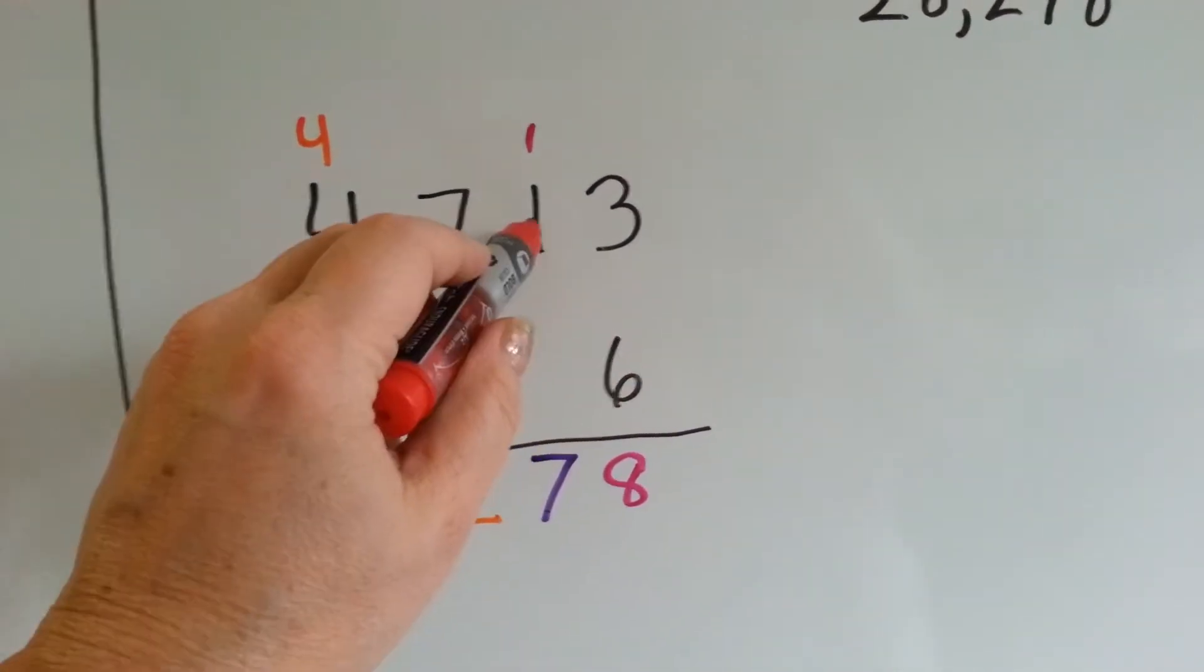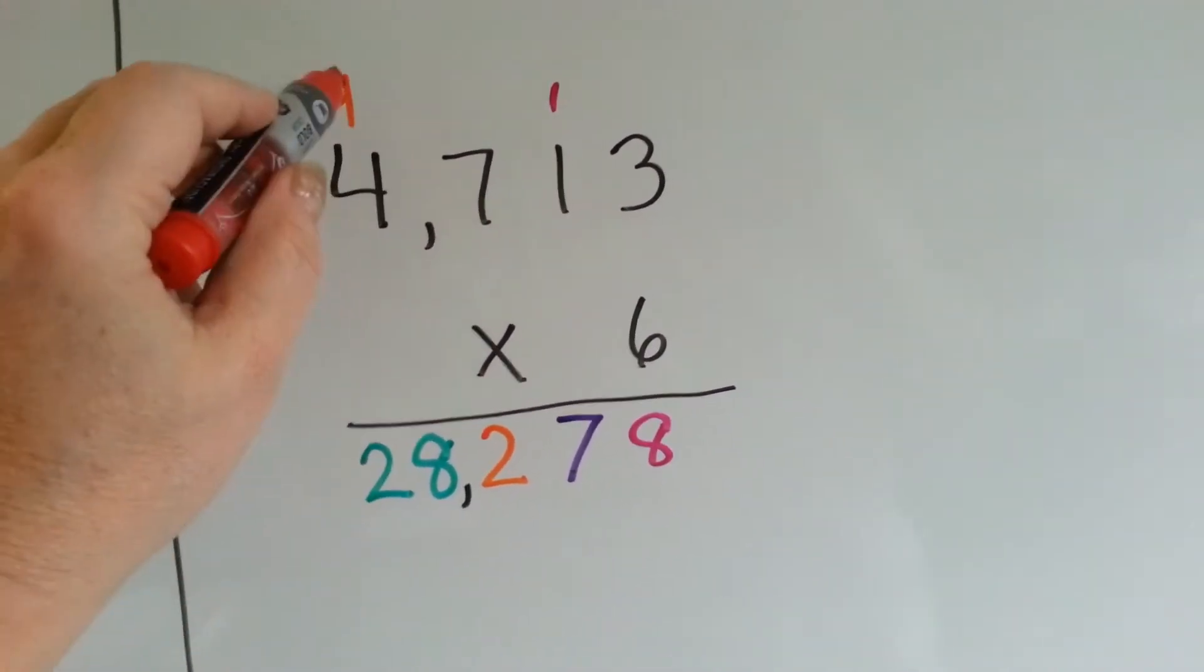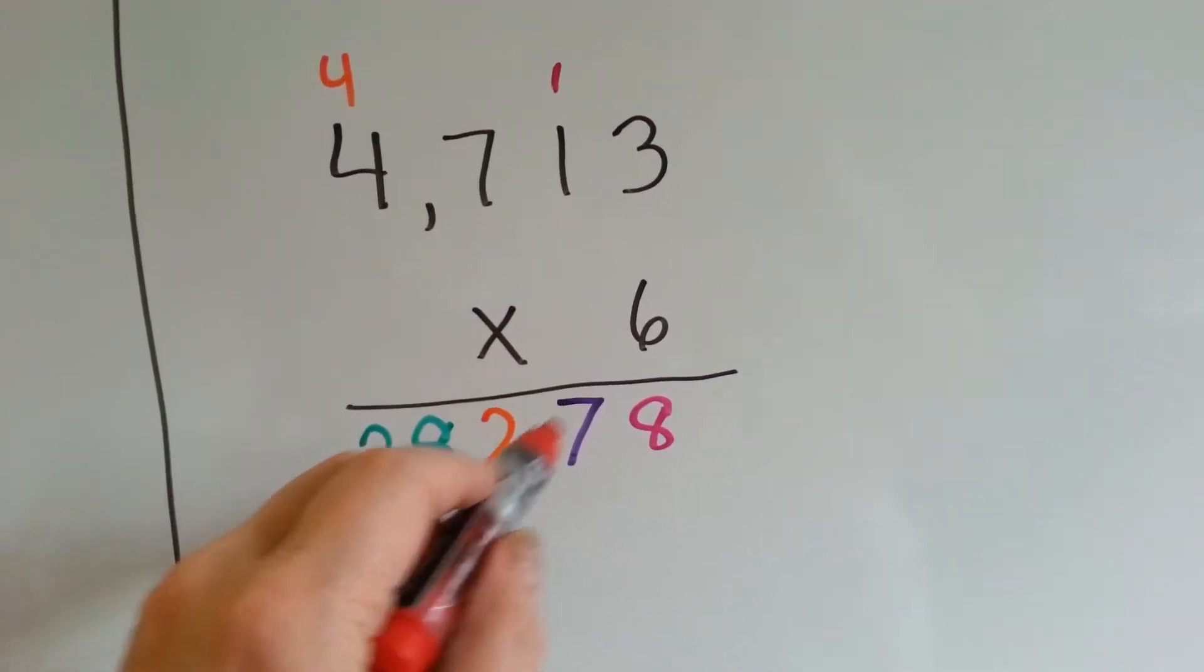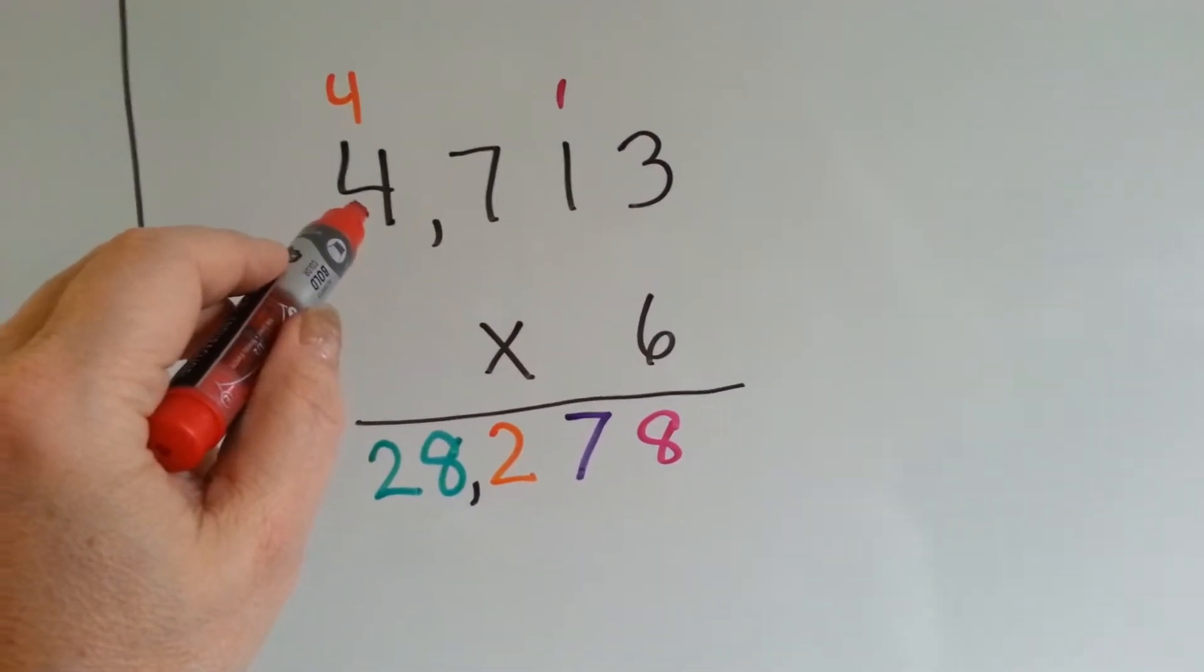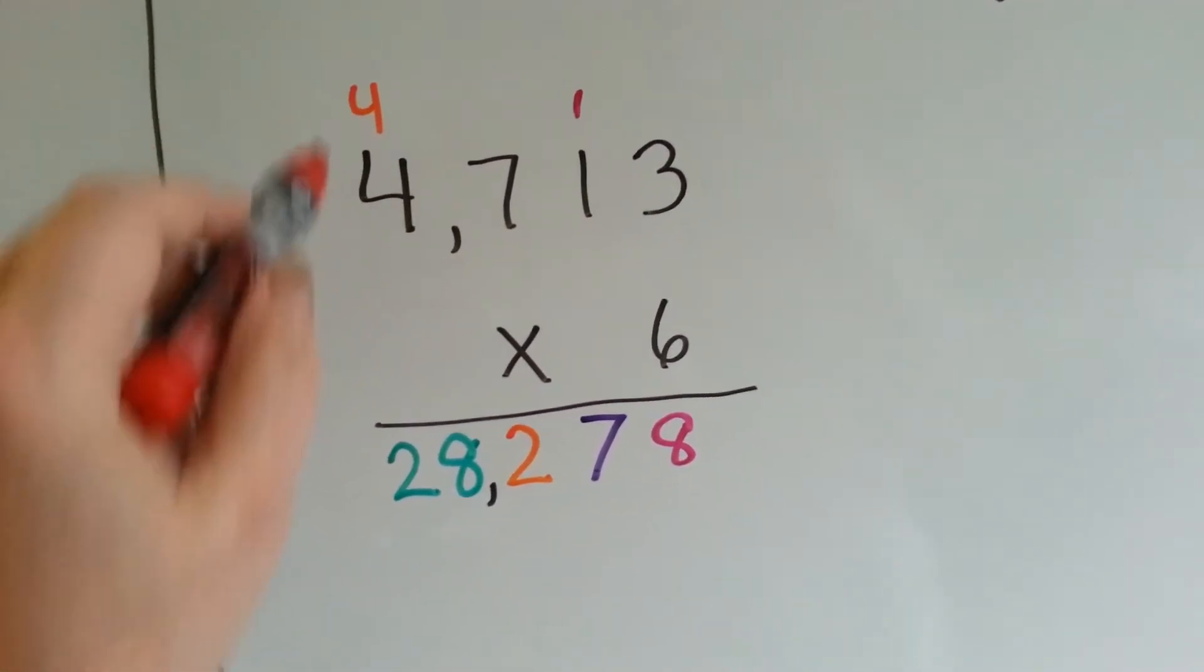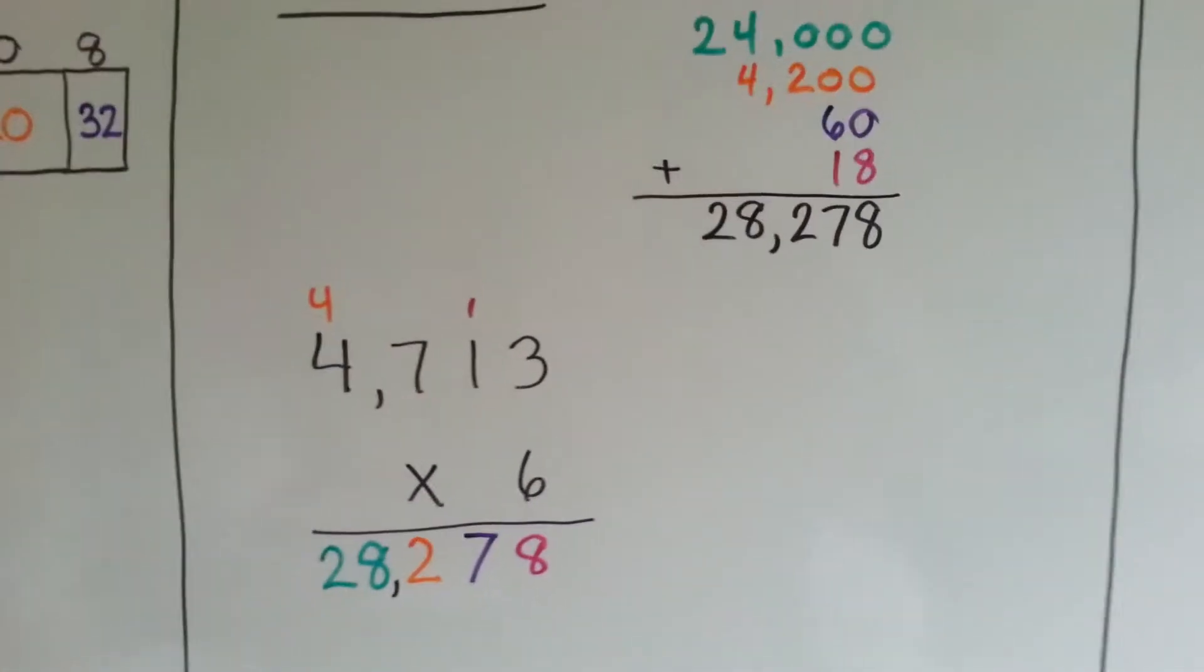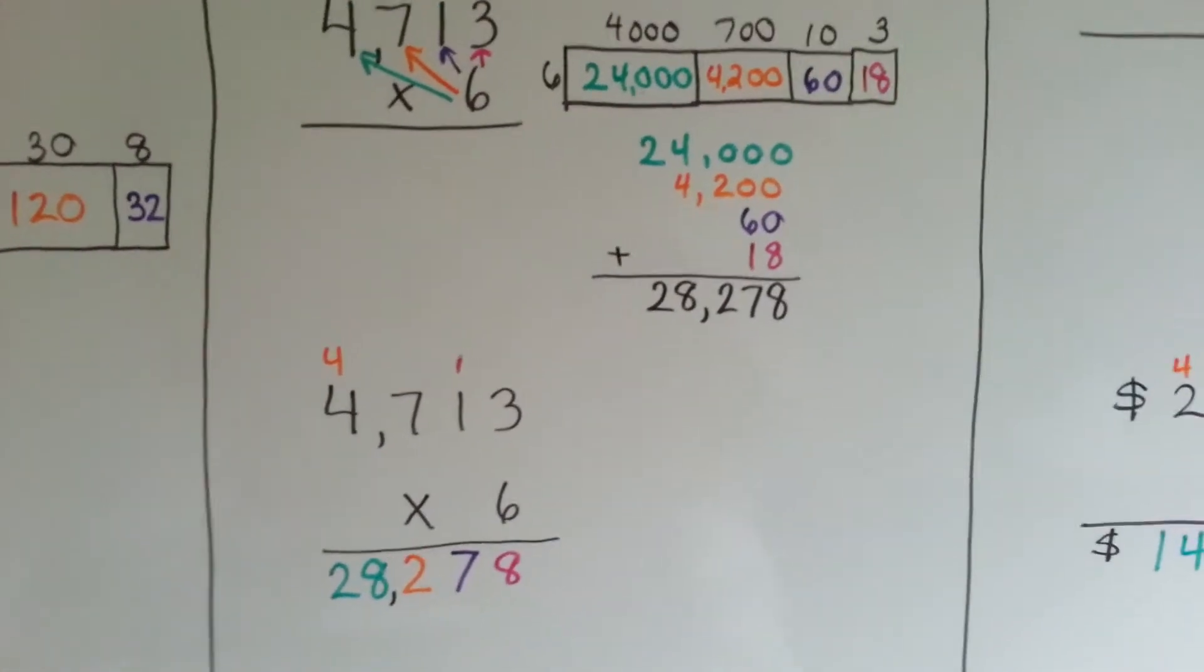All right, so 6 times 1 is 6, plus the 1 is 7. 6 times 7 is 42. We carry the 4 and put the 2 down. 6 times 4 is 24, plus 4 is 25, 26, 27, 28. And we get 28,278, just like we did for the partial product method.